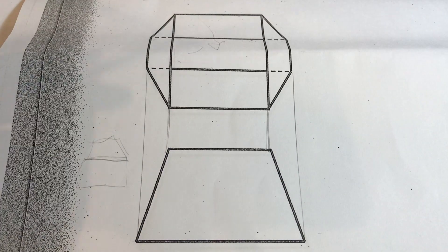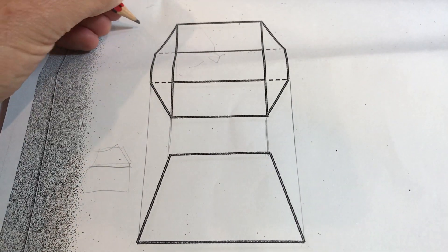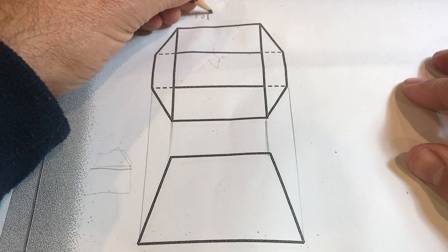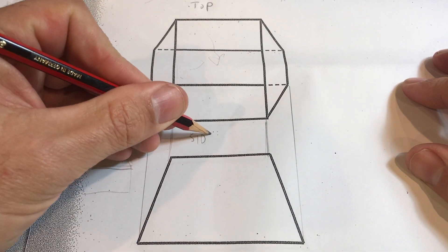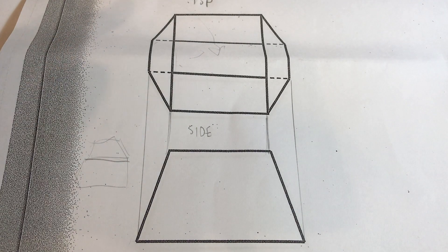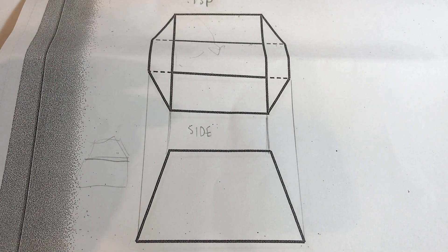So we've got top view here, I'm going to label it top, and we've got a side view, and from this we're going to create our half development.